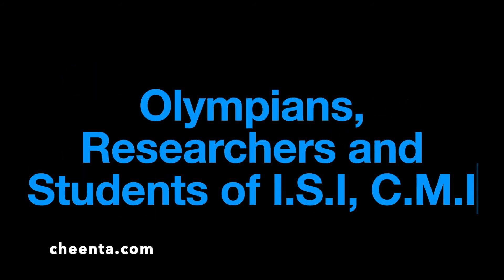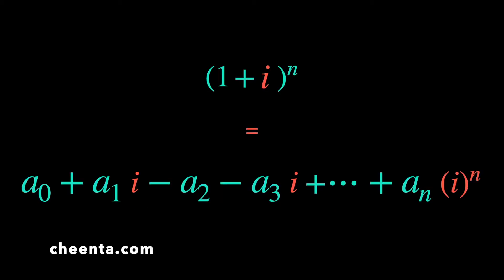The faculty members and students at Chinta are extremely interested in mathematics; you can visit chinta.com to find out more. Coming back to the problem: we have (1 + i)ⁿ = a₀ + a₁i − a₂ − a₃i + …, which we already found. We will now look at the real part and the imaginary part of this expression.